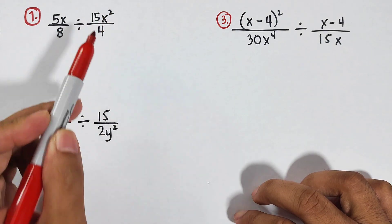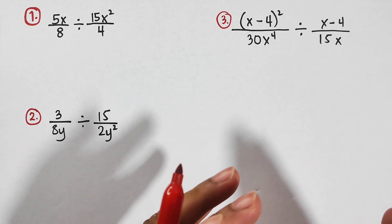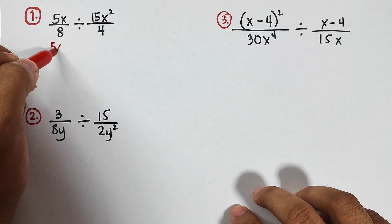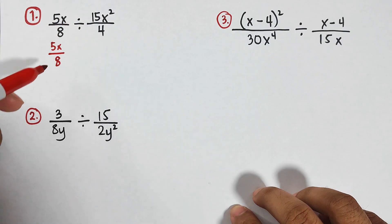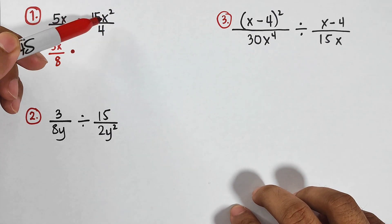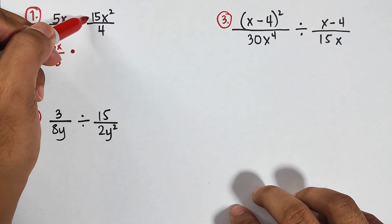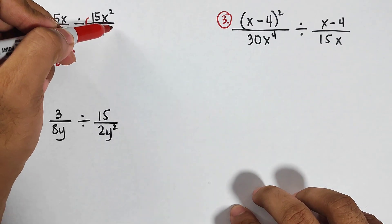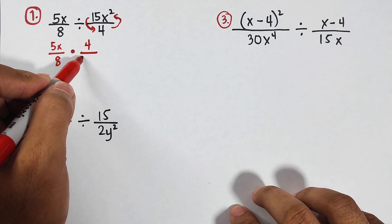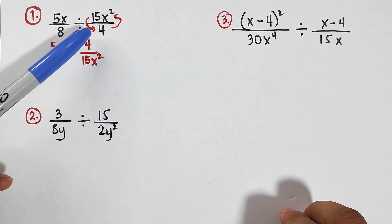Number one: we are given 5x over 8 divided by 15x squared over 4. Always remember that in dividing rational algebra expressions, you will always go through multiplying. First, copy 5x over 8, then replace the division symbol with a multiplication symbol. Next, get the reciprocal of the second expression: 15x squared over 4 becomes 4 over 15x squared.